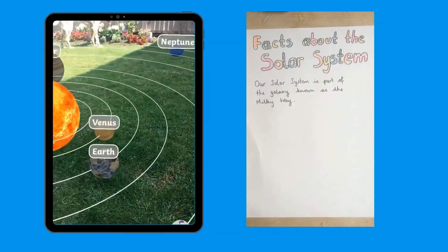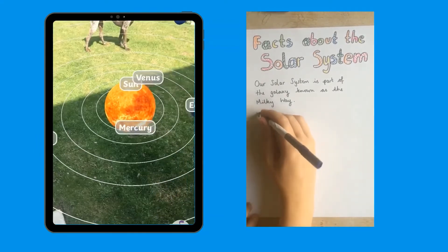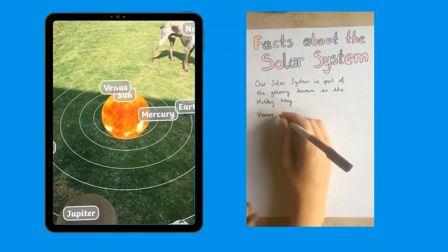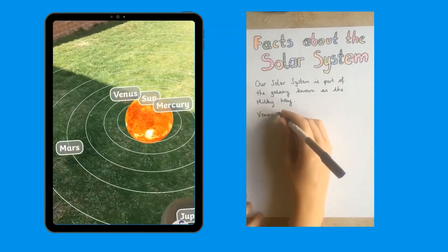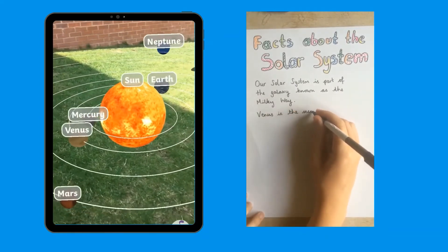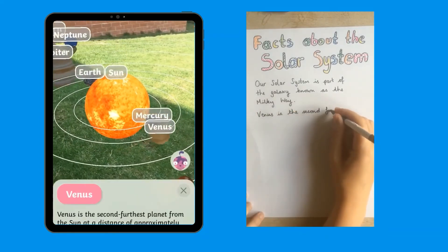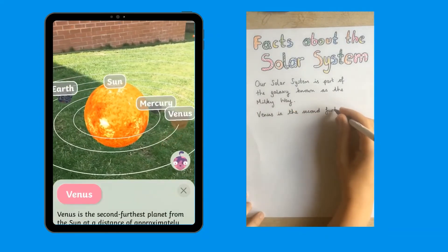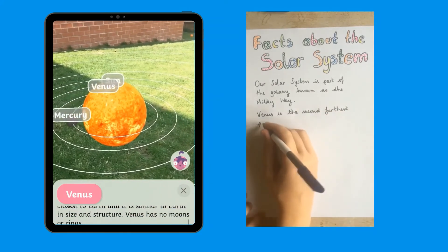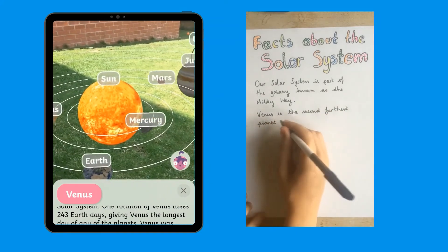Why not use the AR technology to get your children excited about completing their homework? The information hotspots on each lifelike model provide a range of facts and information to bring excitement to research tasks. The information is written by teachers so you know it is age-appropriate and accessible.